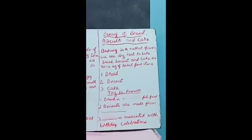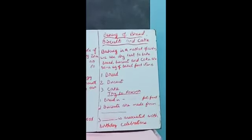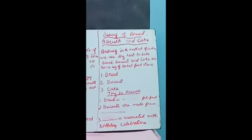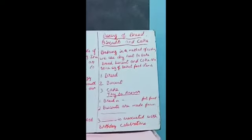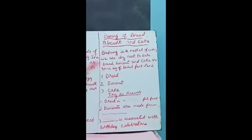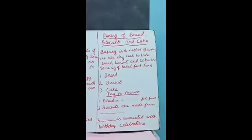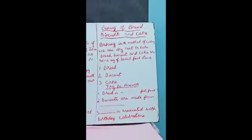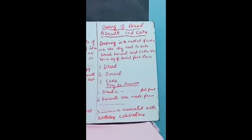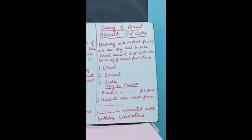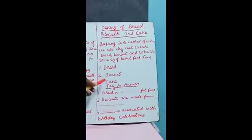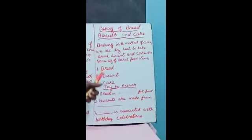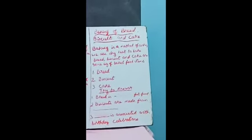The last one is cake. You all like cake. When will you buy a cake? In birthday time, you will cut the cake. From the bakery only you get the cake. The cake has colourful cream and is sweet, with so many flavours. If you eat too much of these things, it will spoil your teeth. So you have to take only a little bit of cake. So bread, biscuit, and cake — these three items are done in the bakery.